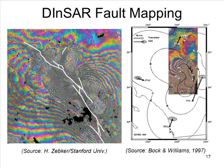These digital elevation maps, by the way, are something you can obtain pretty easily. You can go on the Internet, Google the appropriate sources, and download this data. You can also look at how the elevation is changing over time, and you can do this to extreme precision by looking at the phase of the reflected signal.